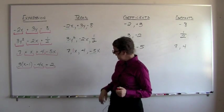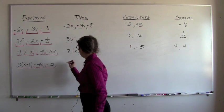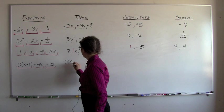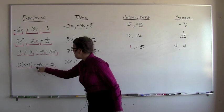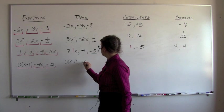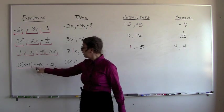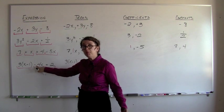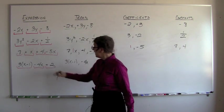So the 3 terms up here are 3 times the quantity x minus 1, negative 4x—because remember, whatever sign is to the left of a number belongs to that number—and a positive 2.